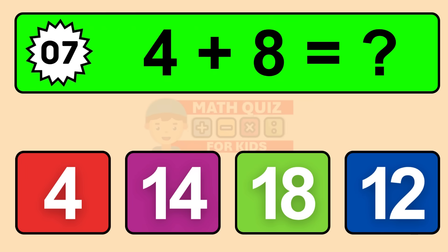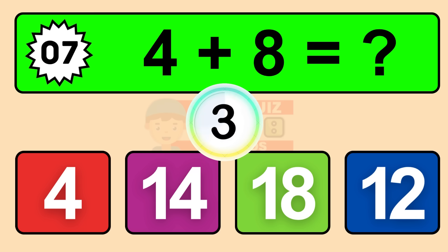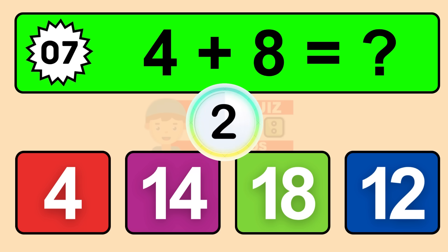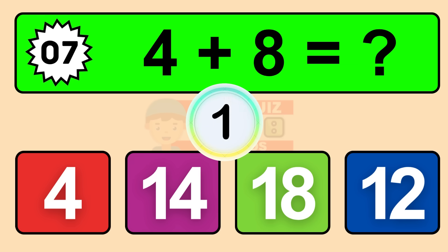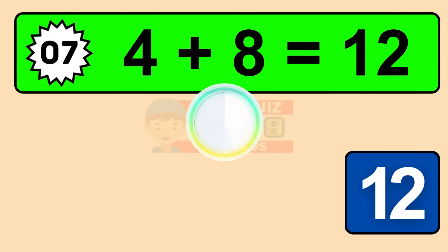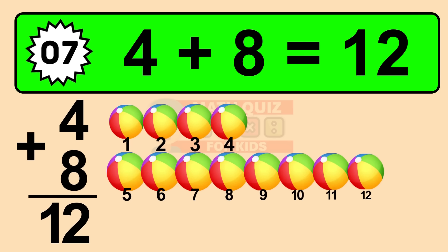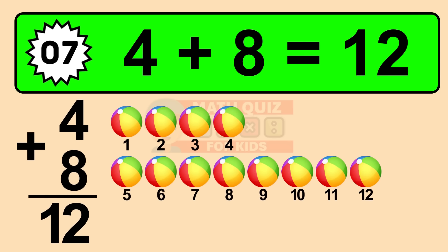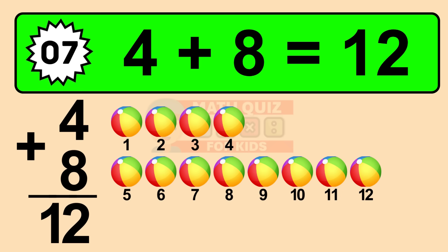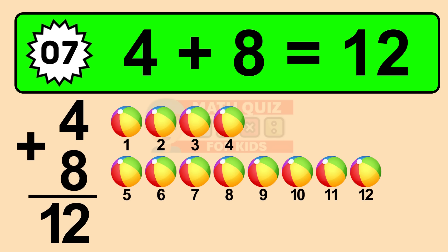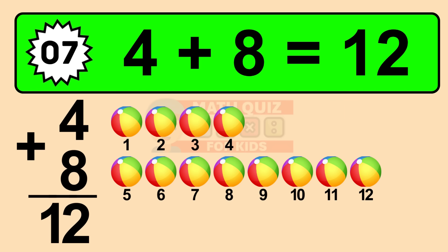Question seven: four plus eight equals what? The answer is four plus eight is twelve. Let's count it. One, two, three, four, five, six, seven, eight, nine, ten, eleven, twelve.